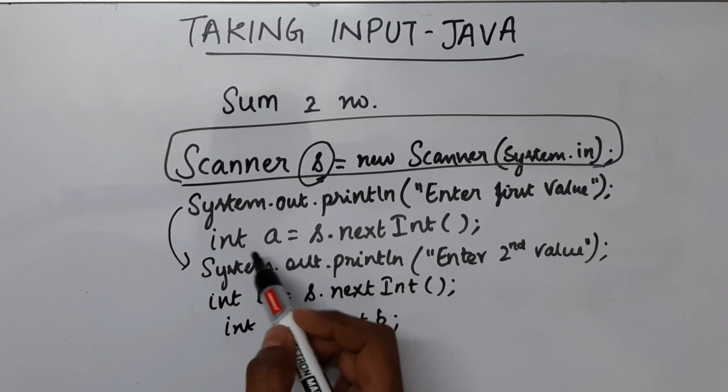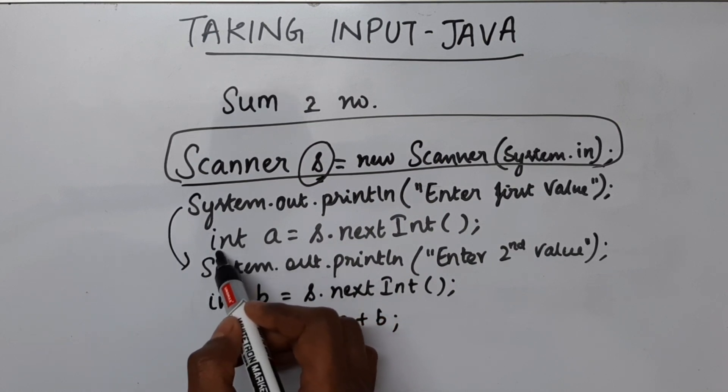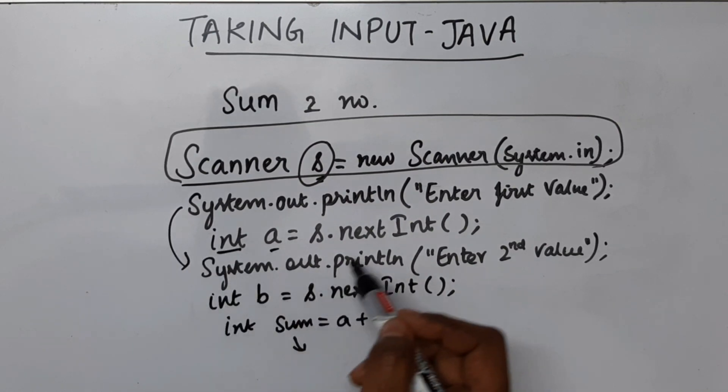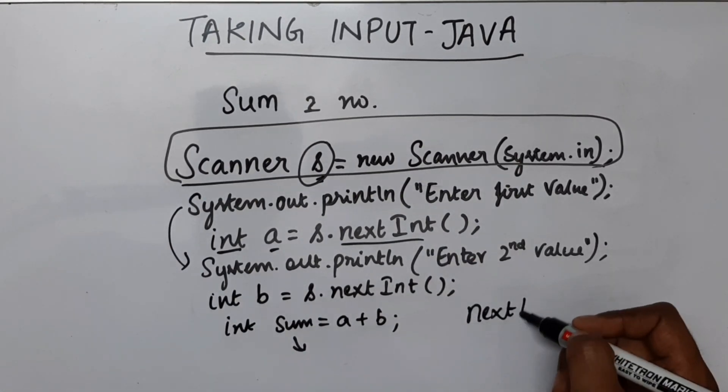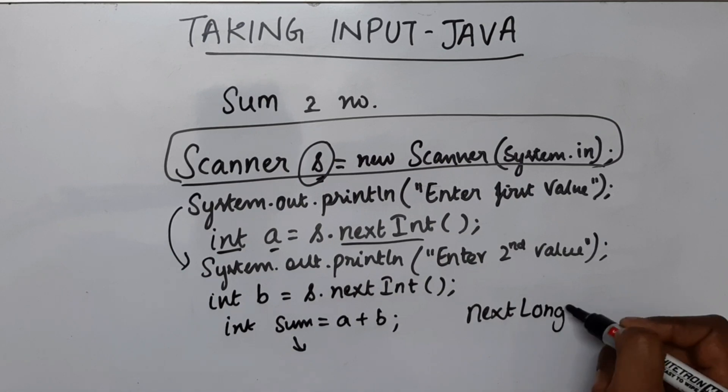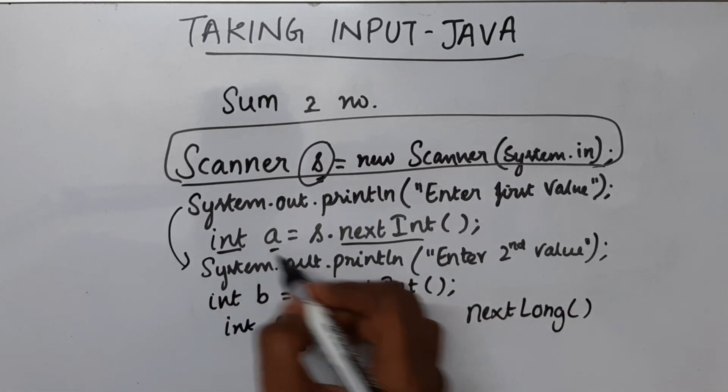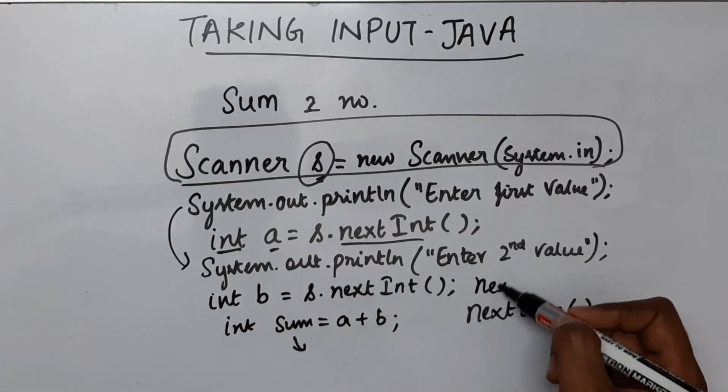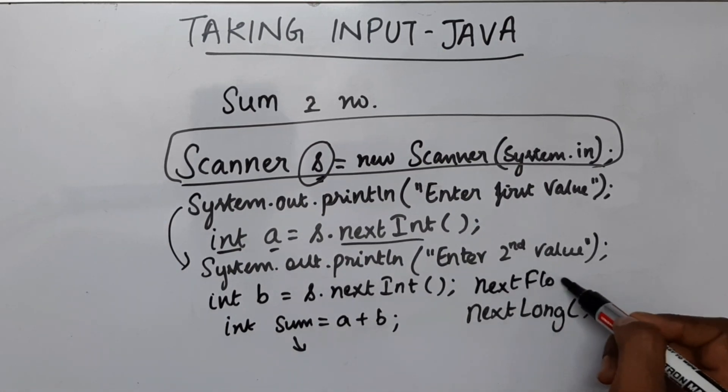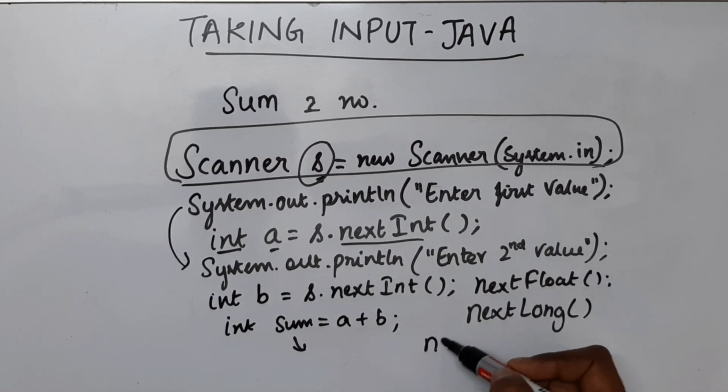So a point to be noted here, since I'm taking input for an integer value a, I'm using nextInt. There are many other methods, let's say nextLong to take if the variable is of type data type long. If it is float I'll be using nextFloat. If it is a string I'll be using nextLine.